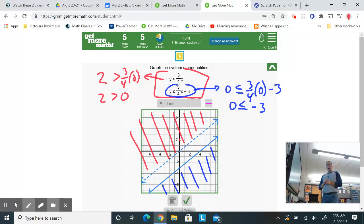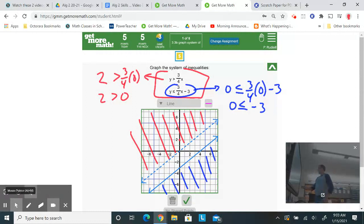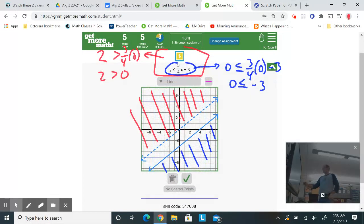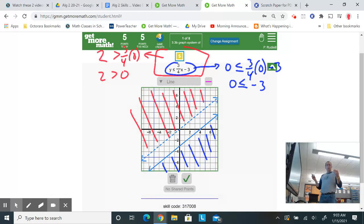So in this problem, are there any overlapping ordered pairs that work for both? Remember, we're solving a system, not just one inequality. We're solving two. And the answer is no. So let's take a look. Look at the choices I have. No shared points. So I have no place to shade. So I don't use anything. I don't use the shade tool at all.